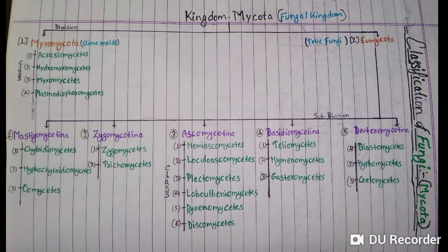The fungi is also called Mycota. The Kingdom Mycota is also called the fungal kingdom. The Kingdom Mycota is divided into two divisions: the first division is Myxomycota, and the second is Eumycota.